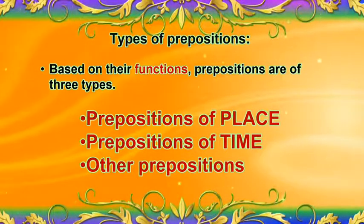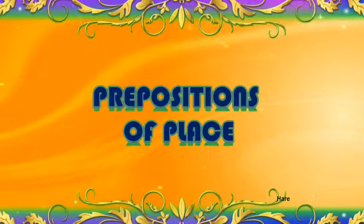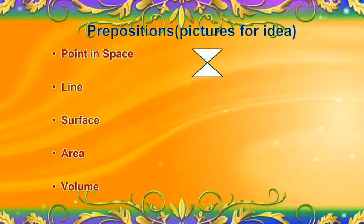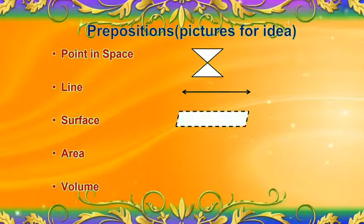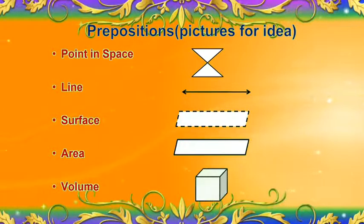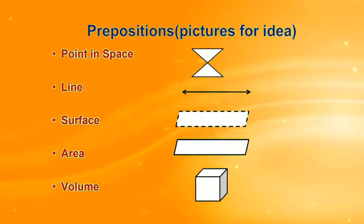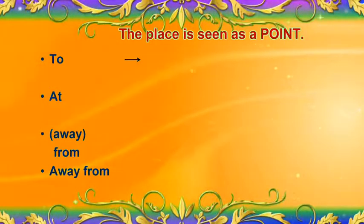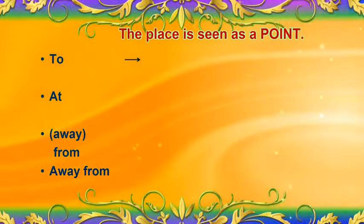Let us discuss about prepositions of place. We have point in space, line, surface, area, and volume — these are symbols for different objects or things. If the place is seen as a point, the prepositions used are: to, at, away from, and from.